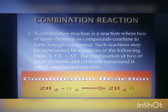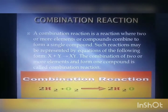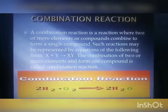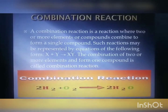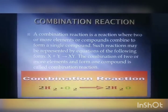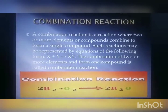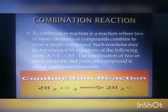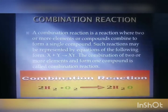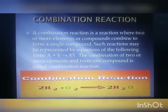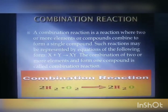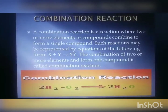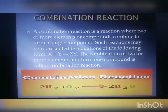The first type of chemical reaction we are going to discuss is the Combination Reaction. A combination reaction is a reaction where two or more elements or compounds combine to form a single compound. Such reactions may be represented by equations of the form: X + Y → XY.